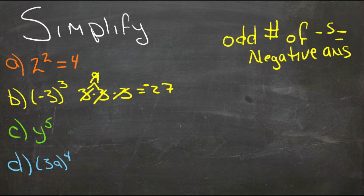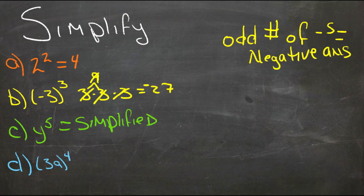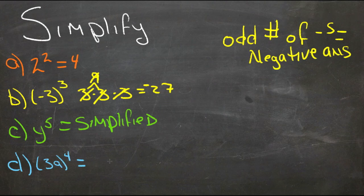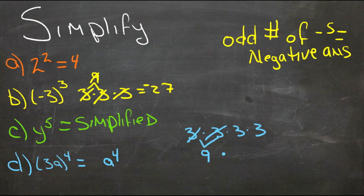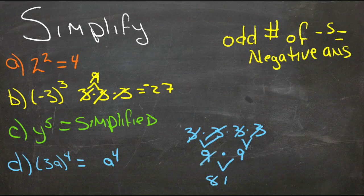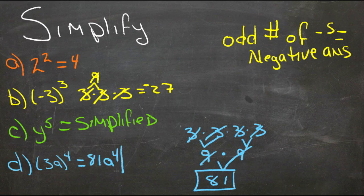C is already fully simplified. For D, we have 3a to the fourth, so 3a times itself four times. The a to the fourth part stays as a to the fourth, but the 3 part can be multiplied out: 3 times 3 times 3 times 3. That gives 9 times 9, which is 81. So our final answer is 81a to the fourth.